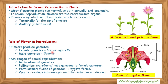Key stages of sexual reproduction: maturation of gametes; pollination — transfer of male gametes to female gametes; and fertilization — fusion of gametes to form a zygote. The zygote develops into an embryo and then into a new individual.